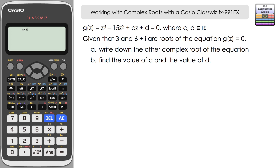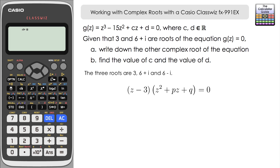This equation comes from the factor that gave us the real root. The real root is 3, so the factor is Z minus 3. We're also going to have a quadratic that gives us the complex roots 6 plus i and 6 minus i, which we'll label Z squared plus PZ plus Q. This quadratic multiplied by our factor gives the full cubic equation, so our job is to find P and Q.